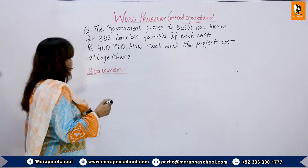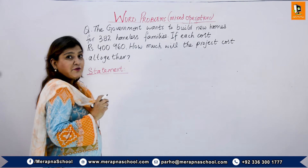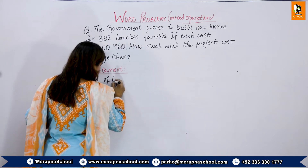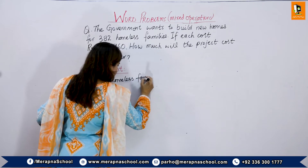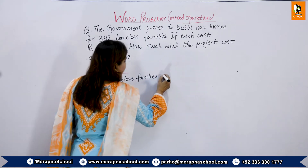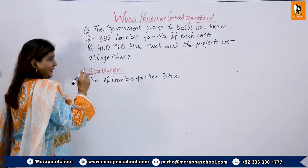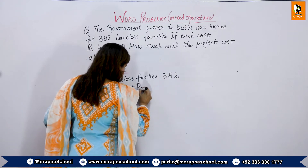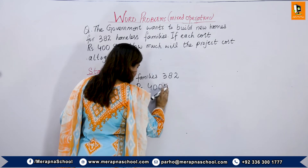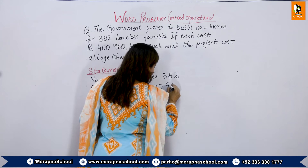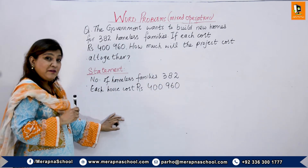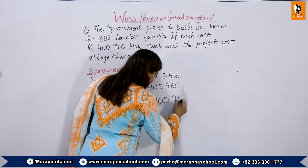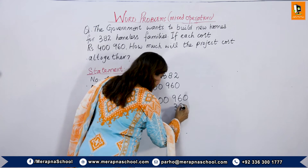Now we write the statement. The statement should be very short. Number of homeless families: 382. Each house cost: rupees 400,960. Since we have to multiply, we write the bigger number first — 400,960 multiplied by 382.